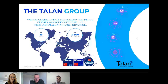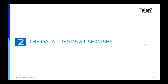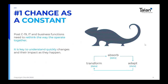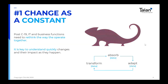Thank you, Alison. So data trends and use cases. Trend number one: change as a constant. The recent crisis has shown that when a shock of that magnitude takes place, it is key to have the broad data to assess the real situation of your company and to start elaborating scenarios to adapt to it. If you're not equipped, it will be much more difficult to collect and analyze data, to make timely and informed decisions. This is currently pushing companies and institutions to rethink the way they operate fundamentally and how departments collaborate together.